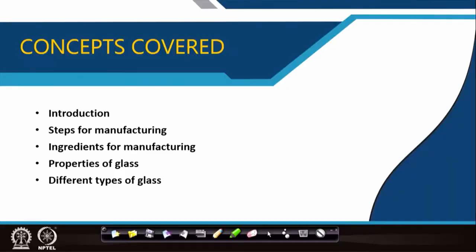Similarly, ceramics have particular applications — mostly required in clinical environments, chemical environments, and biologically safe environments. Ceramic tiles have replaced stone, marble, and granite, and we also have a higher version: vitrified tiles. For glass, we will cover a small introduction, the steps of its manufacturing, the ingredients for manufacturing, the properties of glass, and a list of different types of glass, which we will elaborate on in our next lecture.